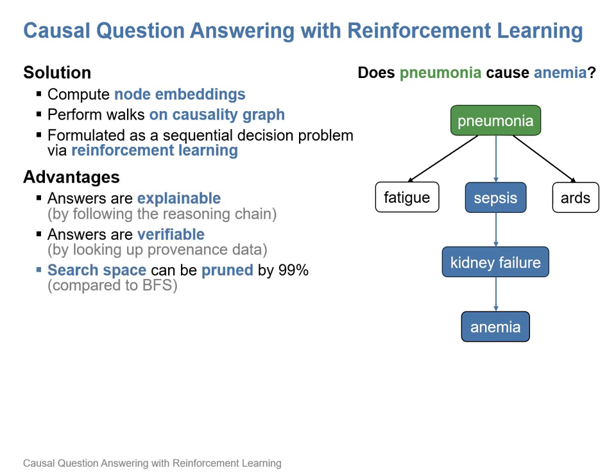Once a path is found, this path can explain the mechanism by which the cause causes the effect. Answers are verifiable because for each edge, provenance data can be retrieved that states the source of the edge. In our experiments, we were able to show that the search space can be pruned by 99% compared to a breadth-first search.